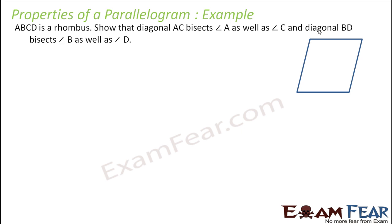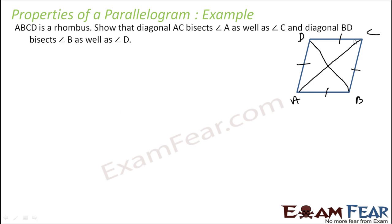ABCD is a rhombus — it is given that ABCD is a rhombus, which means all the sides are equal. Now the next problem: we have to show that diagonal AC bisects angle A as well as angle C, and diagonal BD bisects the remaining angles. So let's label the angles 1, 2, 3, 4. It is just the converse of what we have done.